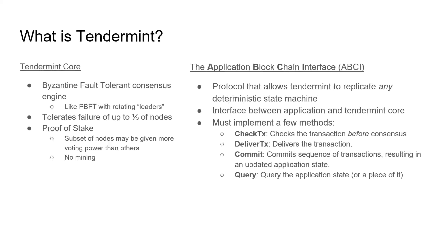The ABCI is the part most developers are interested in. This is the interface that allows your app to communicate with Tendermint Core and ensure that it's properly replicated across all correct nodes in the network. Your application must be deterministic, but otherwise Tendermint can replicate any state machine that implements these methods. These are just a few of the required or more common methods — there are many more that you can implement for more complex applications.